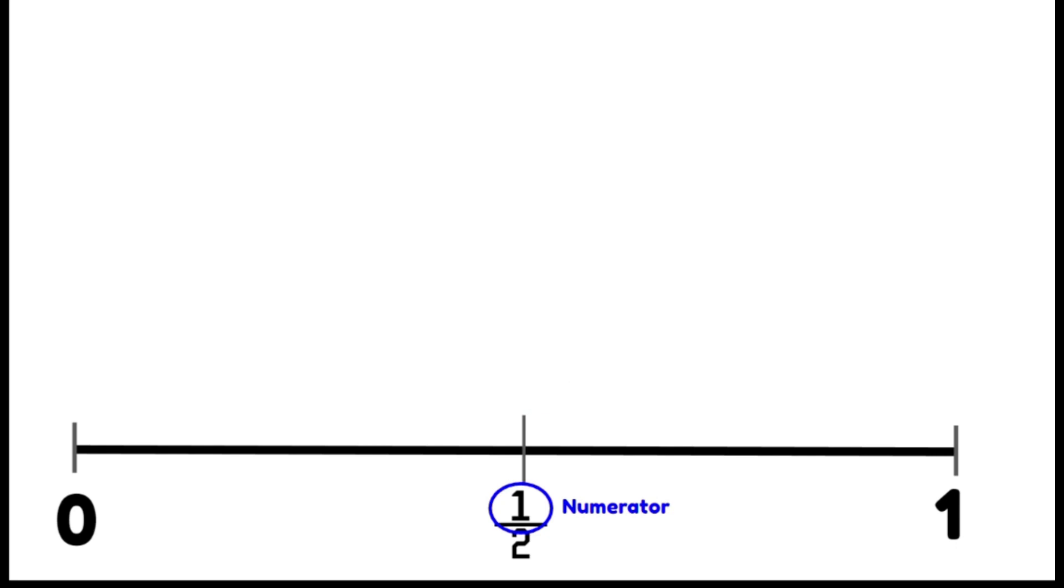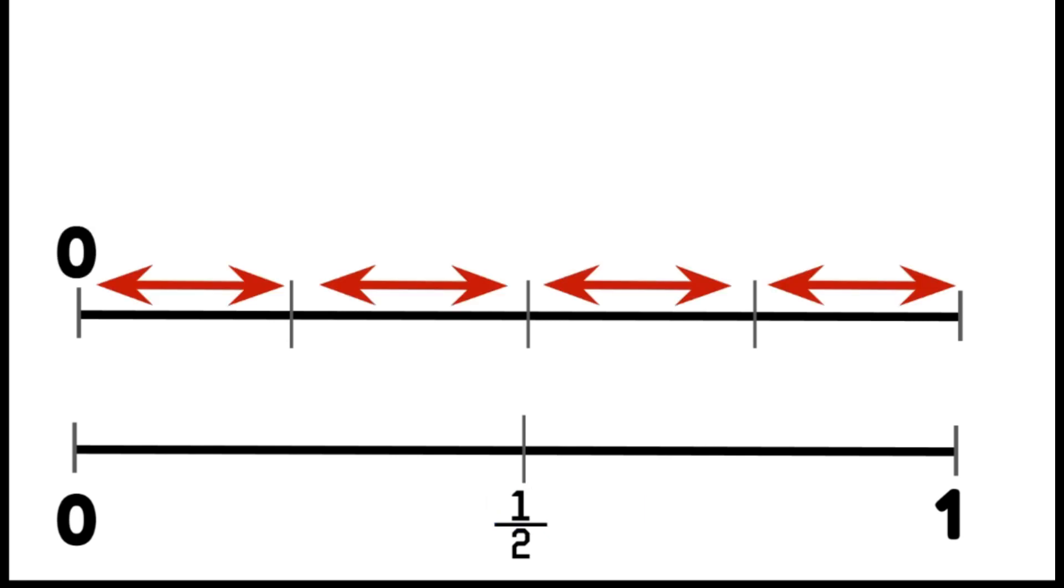We're then going to draw another number line above our number line. This number line we're going to divide into four equal parts. This means we're dealing with quarters. Our denominator is four so we're dividing our number line into four equal parts.